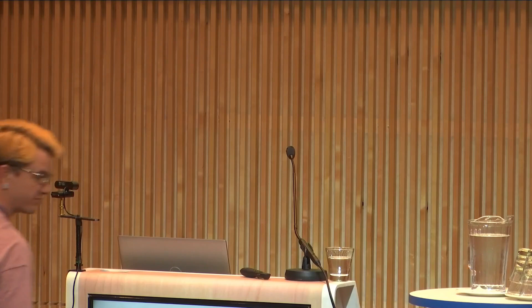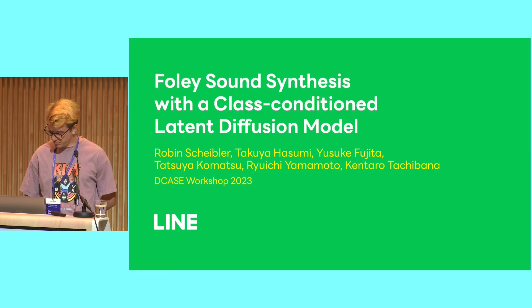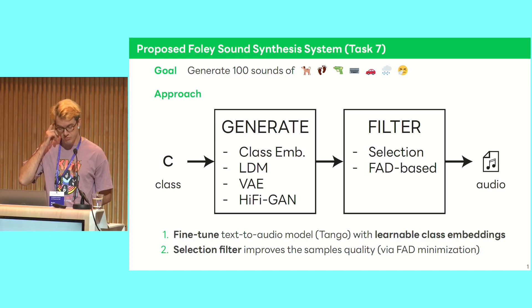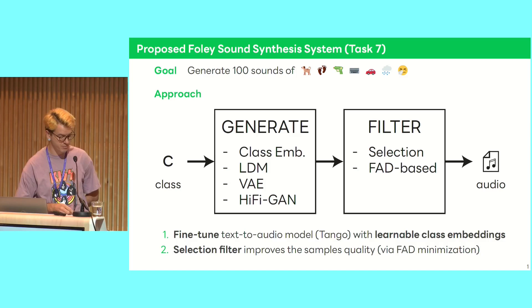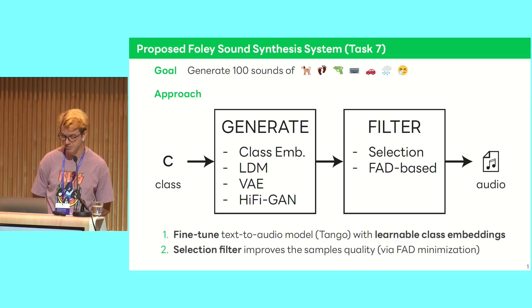Hello everyone. I'm Robin Scheibler from LINE, and we present our submission for the Task 7 challenge. The system was a fully sound synthesis system with a class-conditioned latent diffusion model. The goal was to generate 100 sounds from each of seven classes. Our approach uses a generative model based on latent diffusion in a latent space, first going to MEL spectrogram and then through a variational autoencoder to compress the space. We use an existing text-to-audio model, replacing text embeddings with class embeddings and fine-tuning on the task dataset.